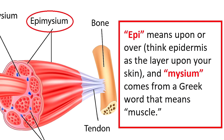As we look at this muscle diagram, you'll notice an outer layer of connective tissue covering the muscle called epimysium. The prefix epi means upon or over — just think of the epidermis, which is the topmost layer upon your skin. And mysium comes from a Greek word that simply means muscle. Therefore, epimysium is that layer of connective tissue that is over or upon the entire muscle organ.